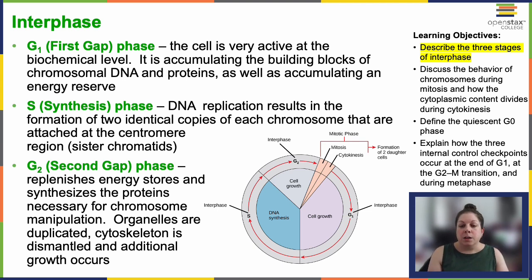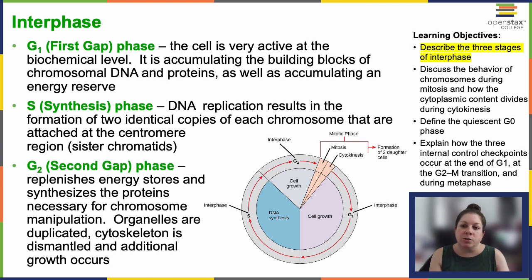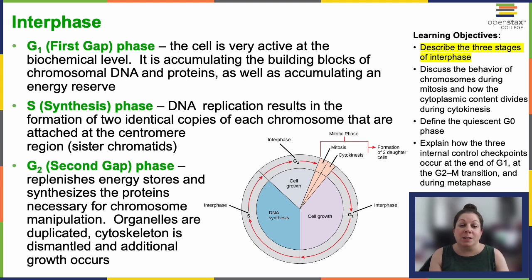During S phase, nuclear DNA in its semi-condensed chromatin state undergoes replication, resulting in the formation of two identical sister chromatids per chromosome. They're firmly connected in the center — that center is called the centromere. Each chromosome is now duplicated. The centrosome is crucial for the mitotic spindle, which is also duplicated, and consists of a pair of centrioles.